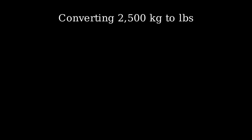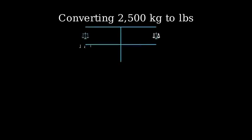Let's learn how to convert 2,500 kilograms to pounds. When converting between kilograms and pounds, we use a simple conversion factor. The conversion factor is 1 kilogram equals approximately 2.20462 pounds.